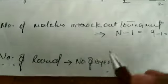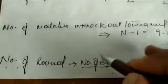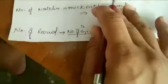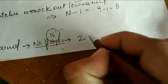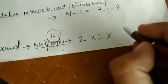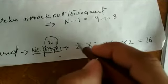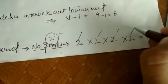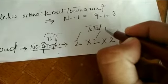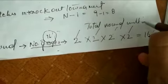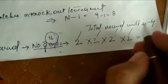Now the number of rounds. I said previously that it is calculated on the basis of the power of 2. My total number is 16. We check the powers of 2: 2 to the power 1 is 2, 2 to the power 2 is 4, 2 to the power 3 is 8, 2 to the power 4 is 16. So the number of rounds will be 4.